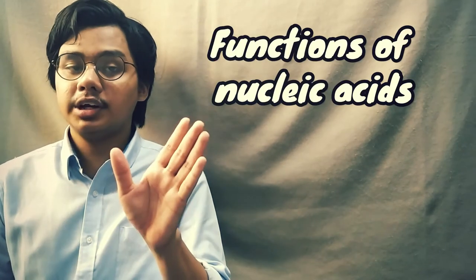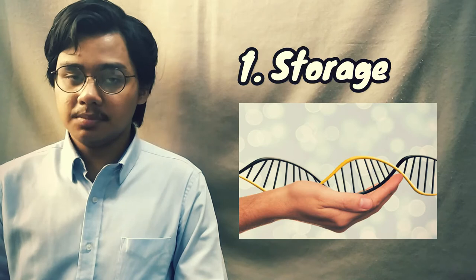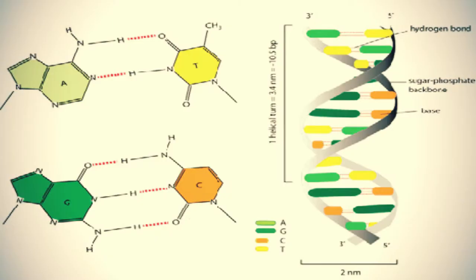Now that we've learned the structure of nucleic acid, let's look at its functions. First, nucleic acid functions as storage for genetic information. Nucleic acids are created in four bases, and information is allowed to be copied because of the base pairing rules. They are copied by using one strand of nucleic acid as a template to create another, so cells are able to both contain and copy information.